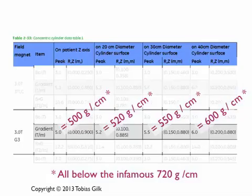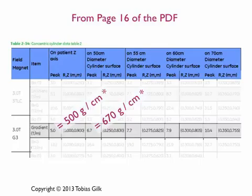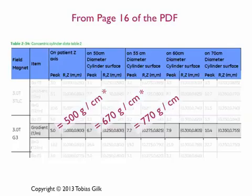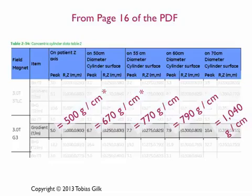That magnet's bore diameter is greater than 40 centimeters, so where's the rest of the data? Unfortunately, you have to jump to page 16, where there's a whole other chart. They start again with the Z-axis value of 500 gauss per centimeter, then pick up at 10-centimeter increments. At 50-centimeter diameter (25 cm radius), the spatial gradient is 670 G/cm. At 55 centimeters: 770 G/cm. At 60 centimeters: 790 G/cm. And lastly, at 70 centimeters — the wall of the bore, since this is a 70-centimeter diameter magnet — the spatial gradient is 1,040 gauss per centimeter.